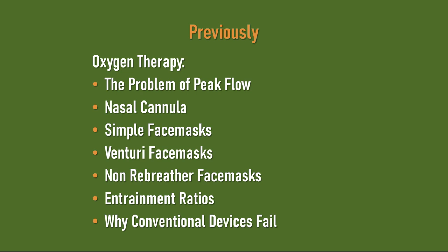Previously we have discussed conventional oxygen therapy, starting with the problem of peak flow, and then we looked at variable performance devices like nasal cannulae and simple face masks. We went on to discuss fixed performance devices such as Venturi face masks and non-rebreather face masks, and then did a whole tutorial on entrainment ratios. At the end of that tutorial I explained why conventional devices fail — principally because they don't deliver sufficient flow to meet peak flow demands, and they don't address the problem of increased work of breathing.